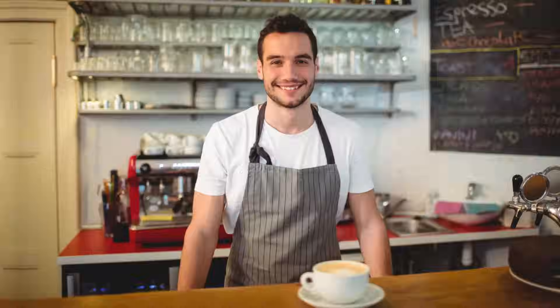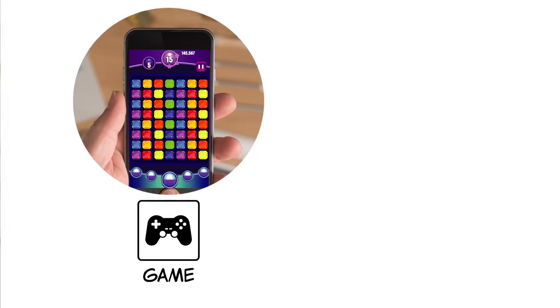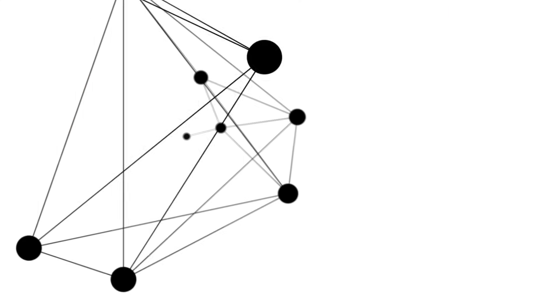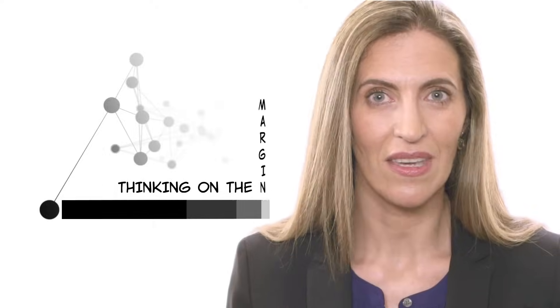At the grocery store, you're choosing between an orange and a banana. At a coffee shop, an espresso or a peppermint mocha. On your phone, it's a game or music. And at each decision you make, you are, even if you're not aware of it, instinctively thinking at the margin. And this is key.